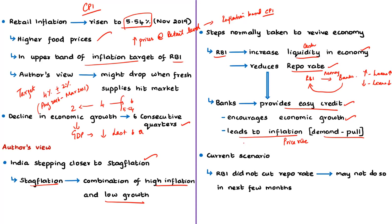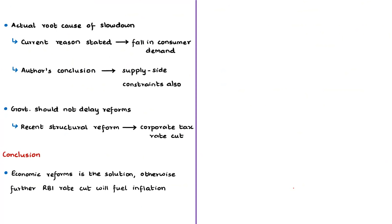Since inflation is already increasing, the RBI may need to increase or maintain the repo rate. That is why RBI did not cut the repo rate in the recent monetary policy. As per the author, RBI is unlikely to cut repo rates aggressively in the next few months, meaning RBI is unable to take steps to revive economic growth. In this context, the author questions what the actual root cause of the slowdown is, given the presence of low economic growth rates along with high inflation.